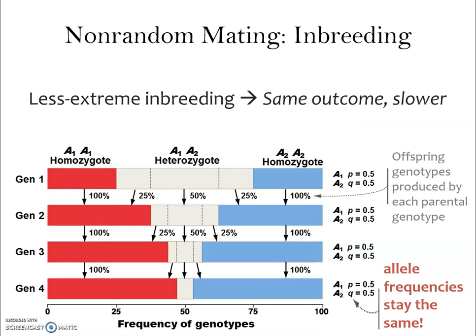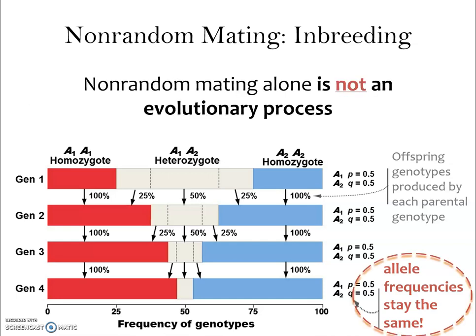If we have something other than self-fertilization, we get the same outcome — the loss of heterozygotes — but it happens more slowly. Self-fertilization is the most extreme and rapid example.